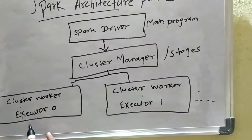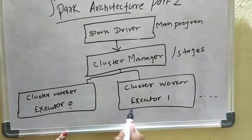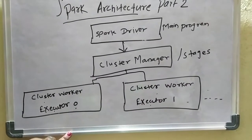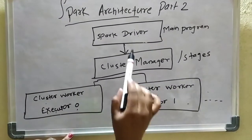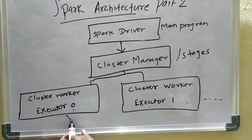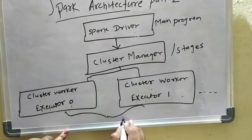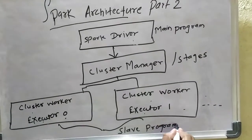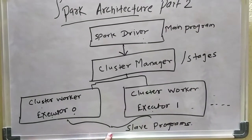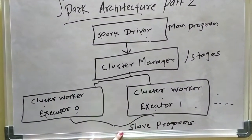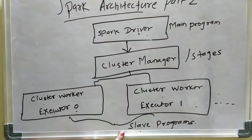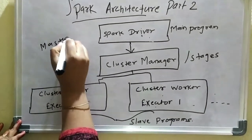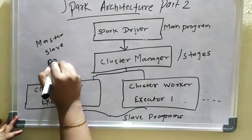The cluster manager divides the work into multiple stages and provides input to the cluster workers. In each cluster worker there are multiple executors — Executor 0, Executor 1, and Executor 2 — which perform specific tasks and generate the output. These are the slave programs. The Spark driver is the master program and the cluster workers or executors are the slave programs, making Spark a master-slave based architecture.